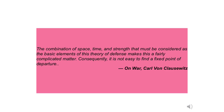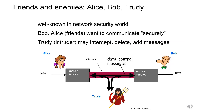Before we jump into the dynamics and the interaction with cryptography, let's take a look at the playing field so that we can get the lexicon, the terms defined, and the actors. So Alice, Bob, and Trudy — you see this throughout cryptography literature. A, B, and T are the actors, but back in the 60s, in a few papers, these were given names: Alice, Bob, and Trudy, and they continue today.